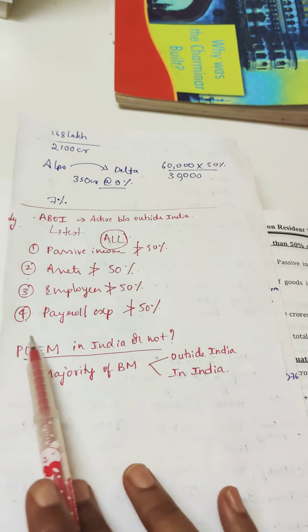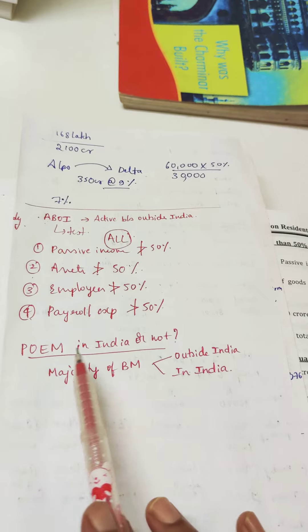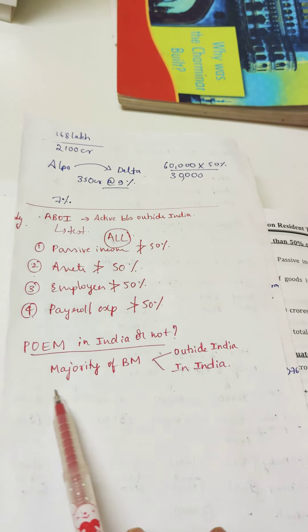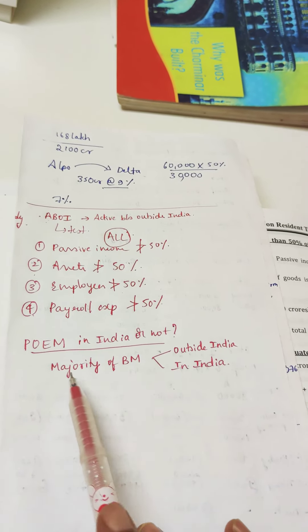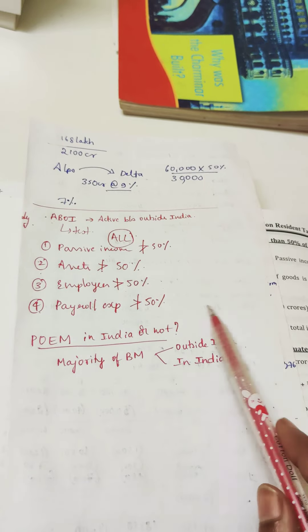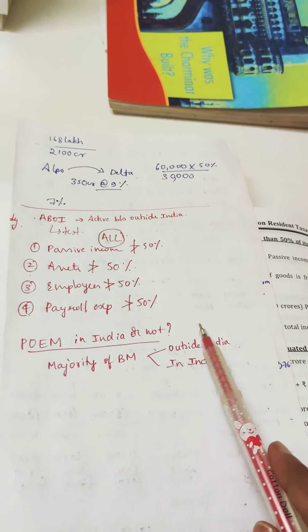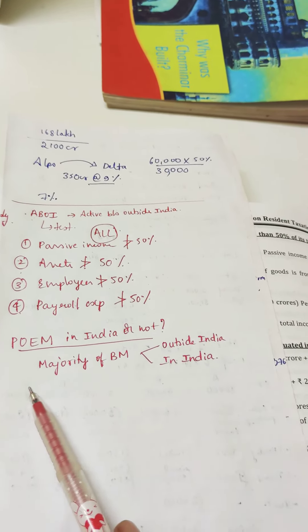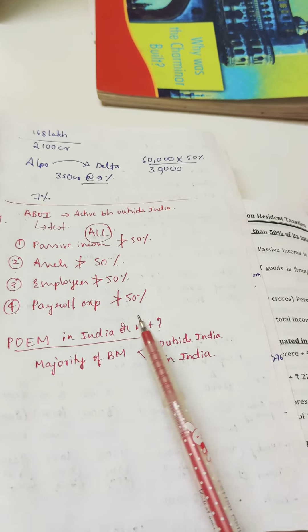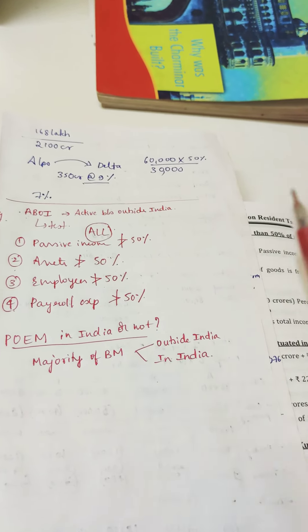To determine whether the place of effective management, or POEM, is in India or not, we check the number of board meetings. If the majority of board meetings are happening in India, then the POEM is in India. If the majority of board meetings are not happening in India, then the POEM is outside India.